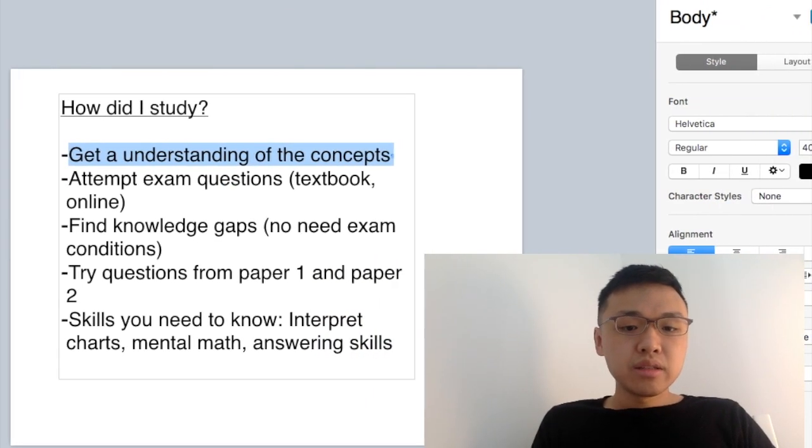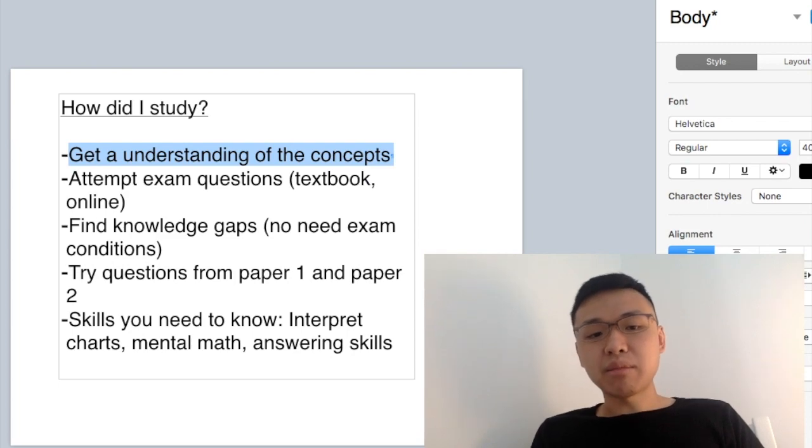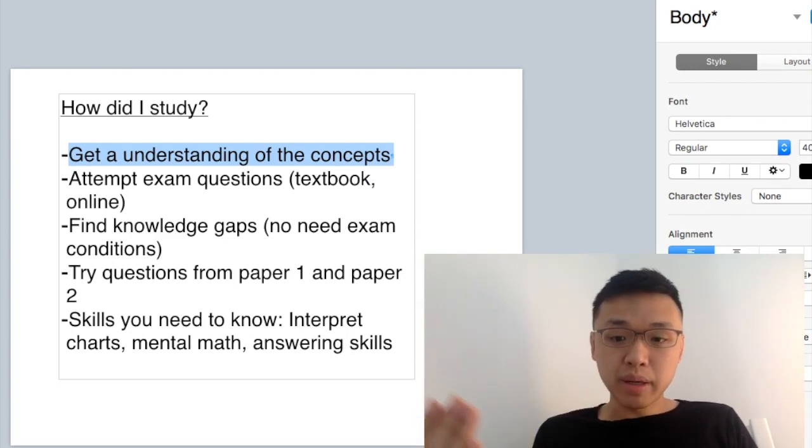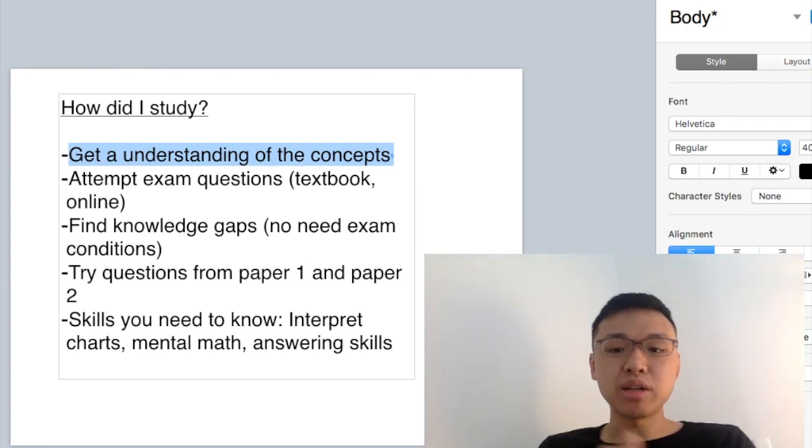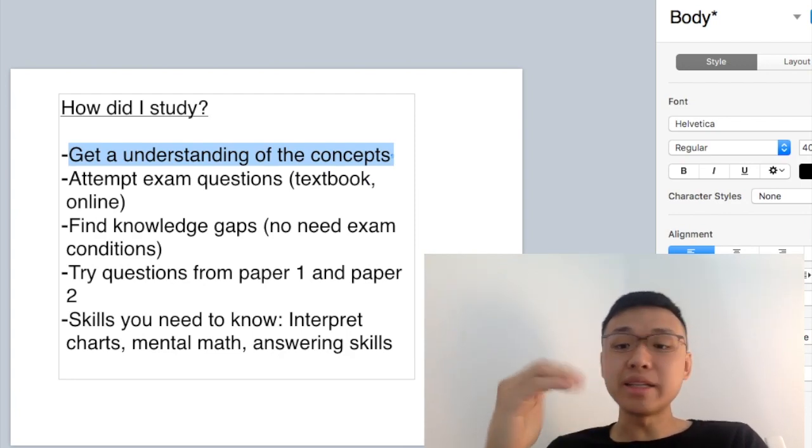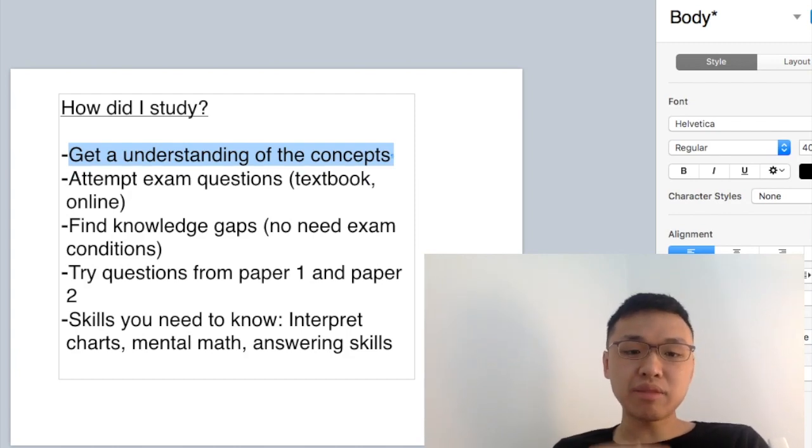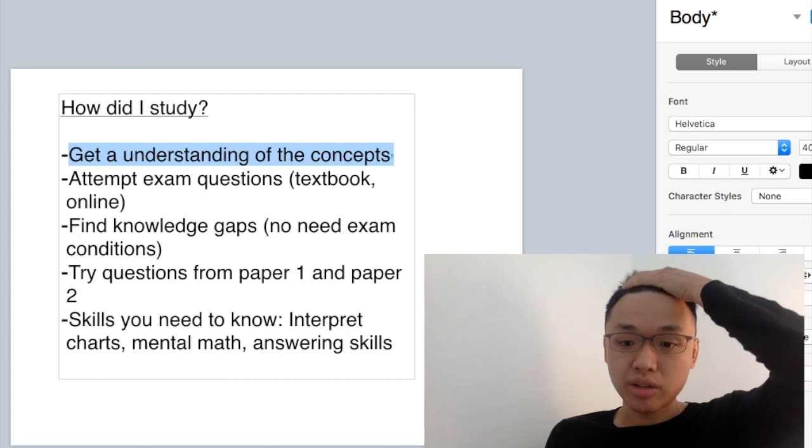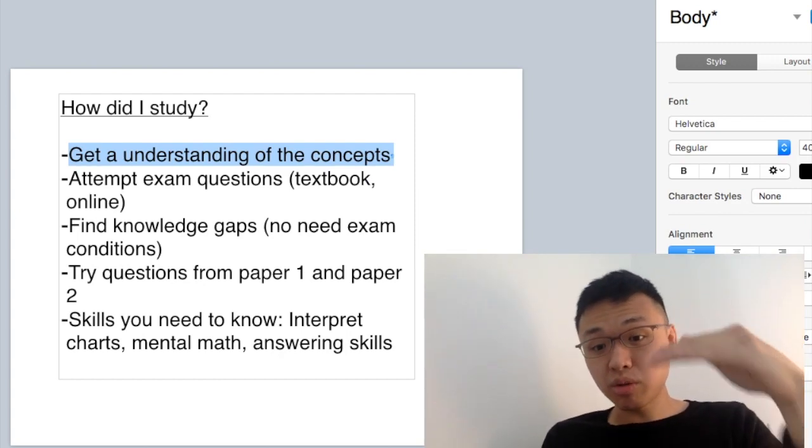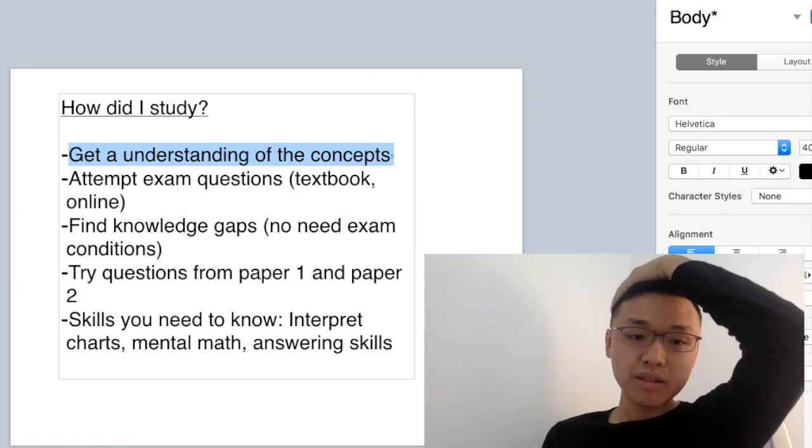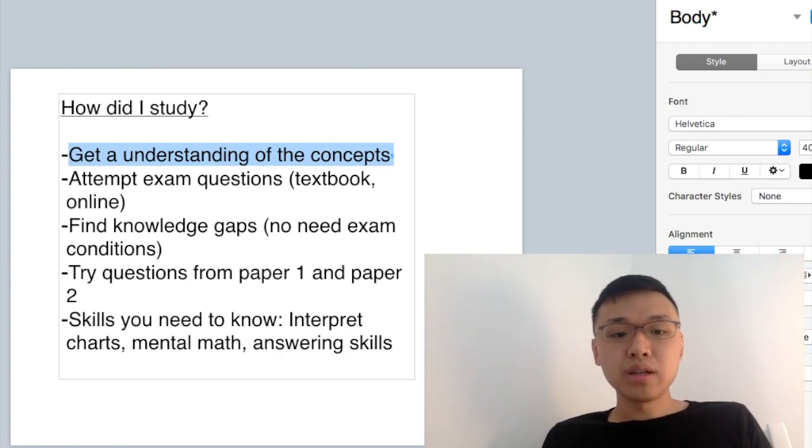Another thing is that when you try exam questions, it's important for you not only to do paper one, because paper one is MCQ. Normally I would do the MCQ questions. Once I master all the MCQ questions, it just means that I know the fundamental concepts already, because normally the MCQs are more basic. But then that doesn't mean I've mastered the topic. So after I do the paper one questions, I try paper two questions, because paper two questions are often more in-depth. But definitely try paper one questions first, because paper one questions are more basic. Once you master them, you can see paper two if you have mastered them.